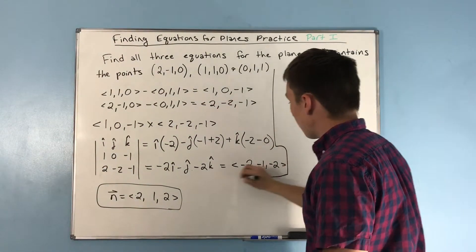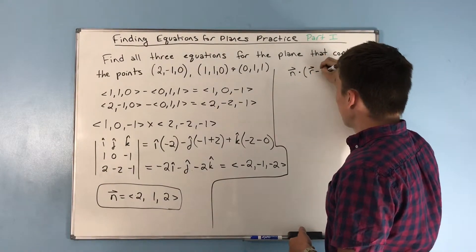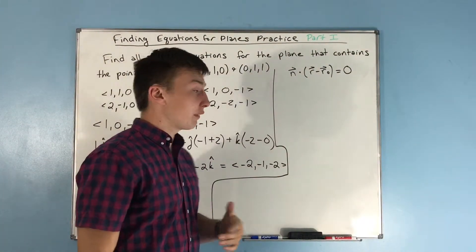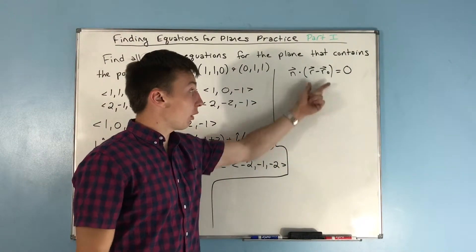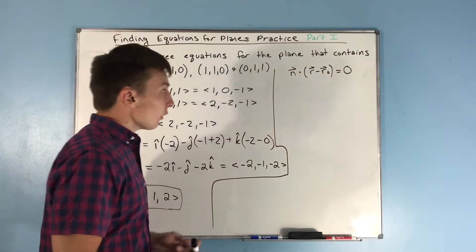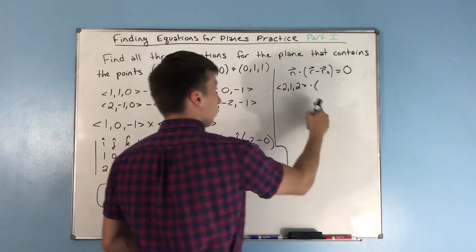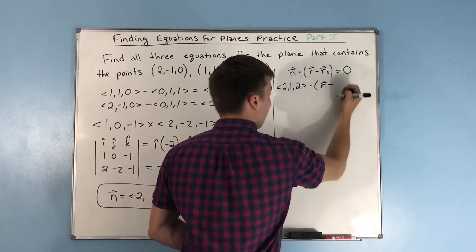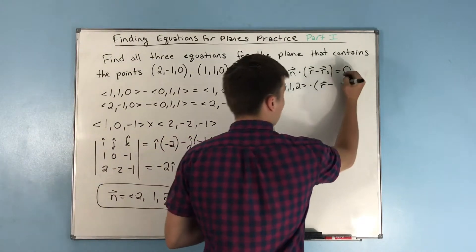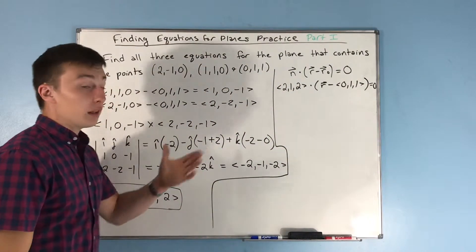Now, finding our equations. The vector equation is n · (r - r₀) = 0. We know that r - r₀ lies on the plane and the normal vector is orthogonal to it, so their dot product is zero. Plugging in our normal vector (2,1,2) and the point (0,1,1), we get (2,1,2) · (r - (0,1,1)) = 0. That's our vector equation.